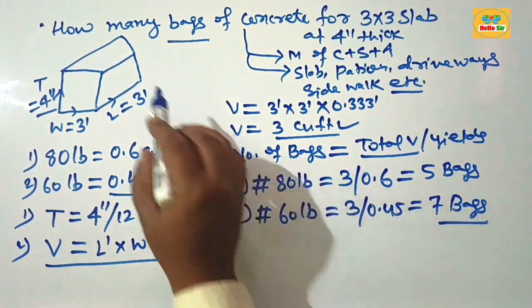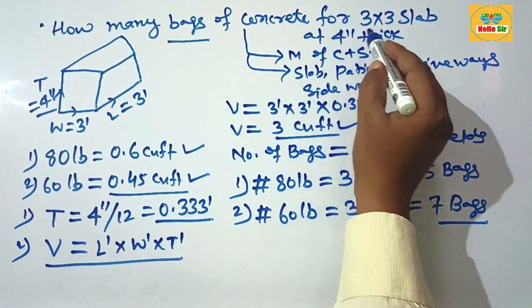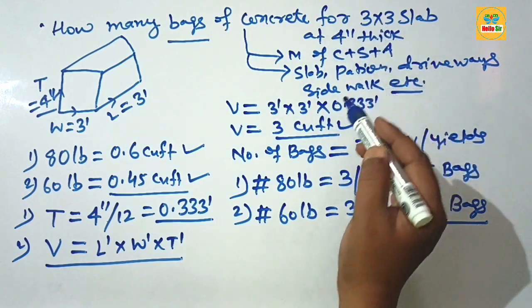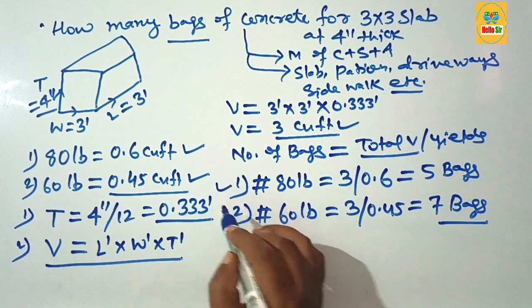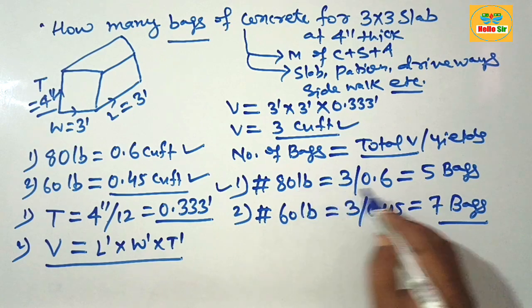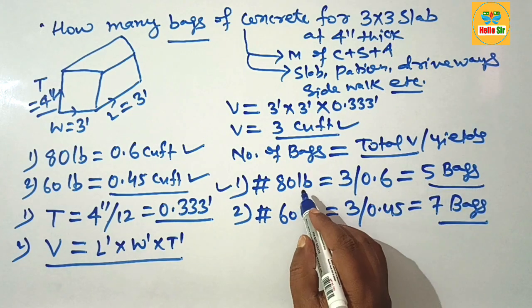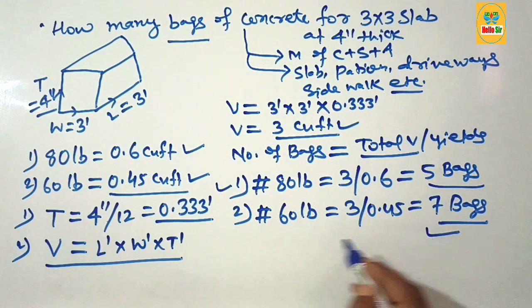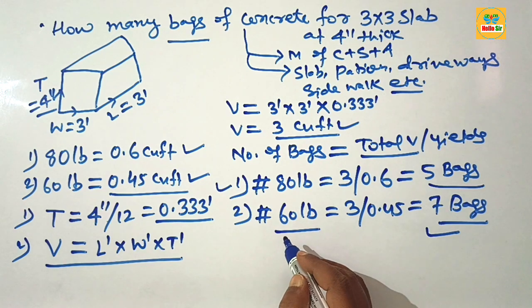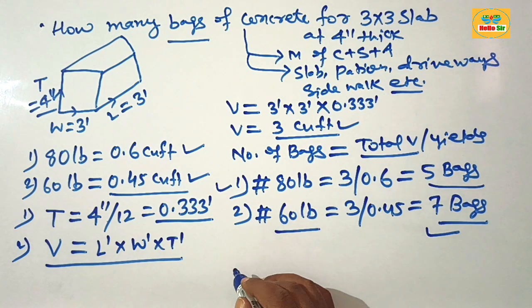So, for a 3 by 3 slab at 4 inches thick, you need to buy either 5 bags of 80-pound concrete or 7 bags of 60-pound concrete. Thank you.